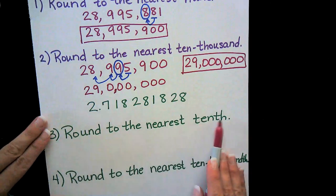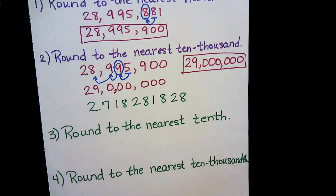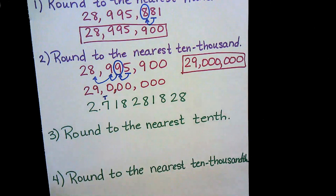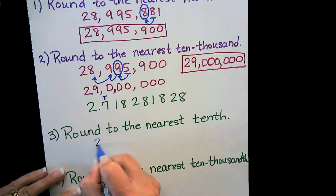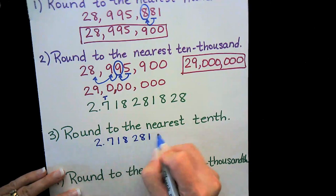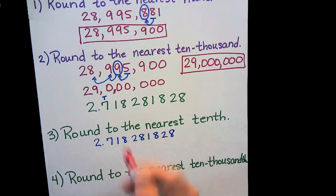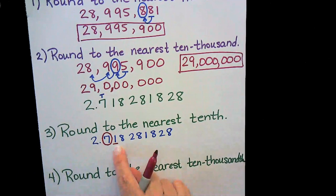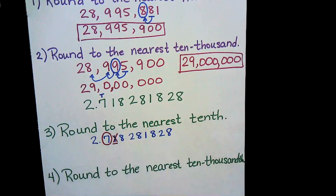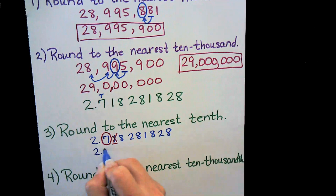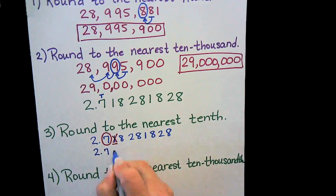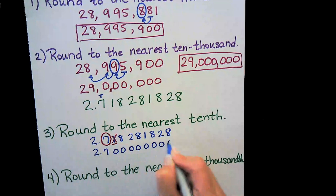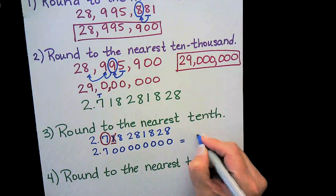We want to round to the nearest tenth. Remember our place values — the tenth place, being very deliberate with that 'th', is right here after the decimal. So I'm going to circle the tenths place and underline the number just to the right of it. My number to the right is not five or higher, so nothing gets bumped up — the circled number stays the same and all digits to the right become zeros. With a decimal we don't have to write all those zeros, so this becomes 2.7.